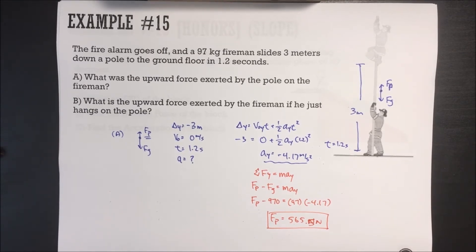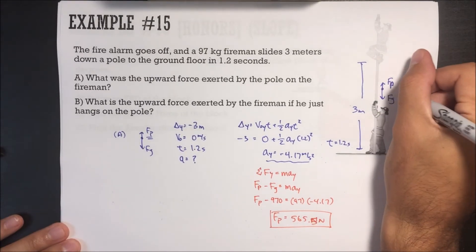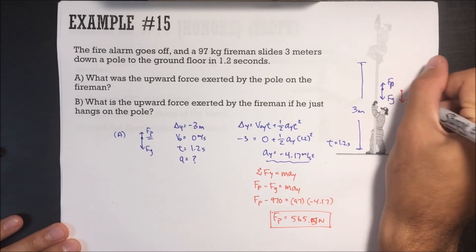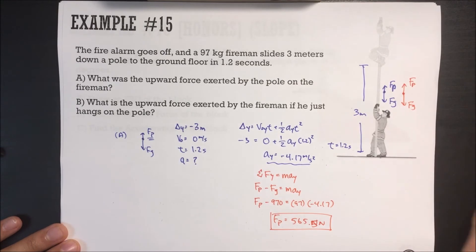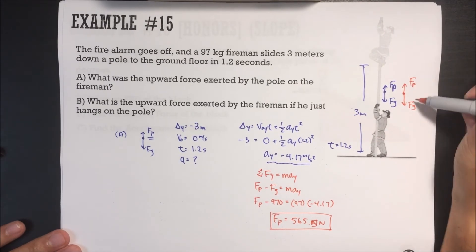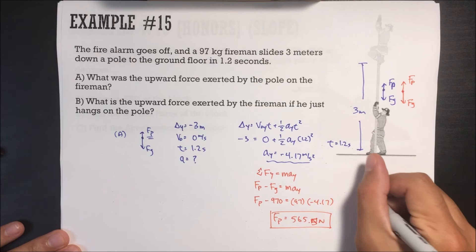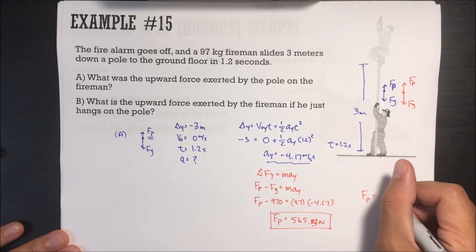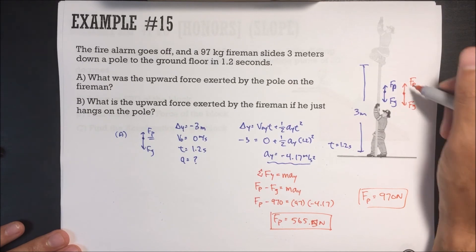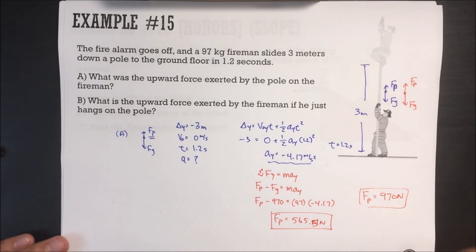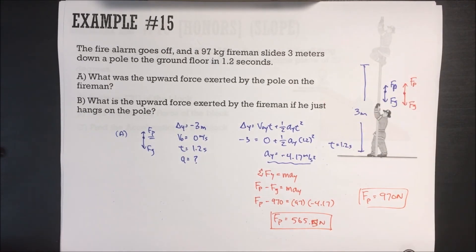What is the upward force exerted by the pole if the fireman just hangs on it? If he just hangs there, there's no acceleration. With no acceleration, the two forces must be equal to each other, so the force of the pole is 970 newtons — the same as the force of gravity since he's not moving. Thanks for watching, see you next time.